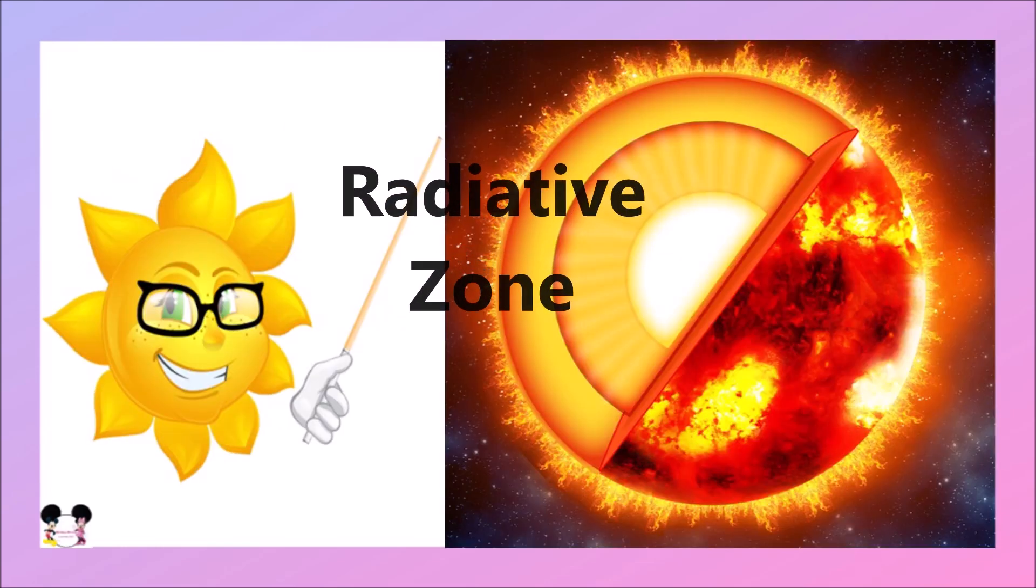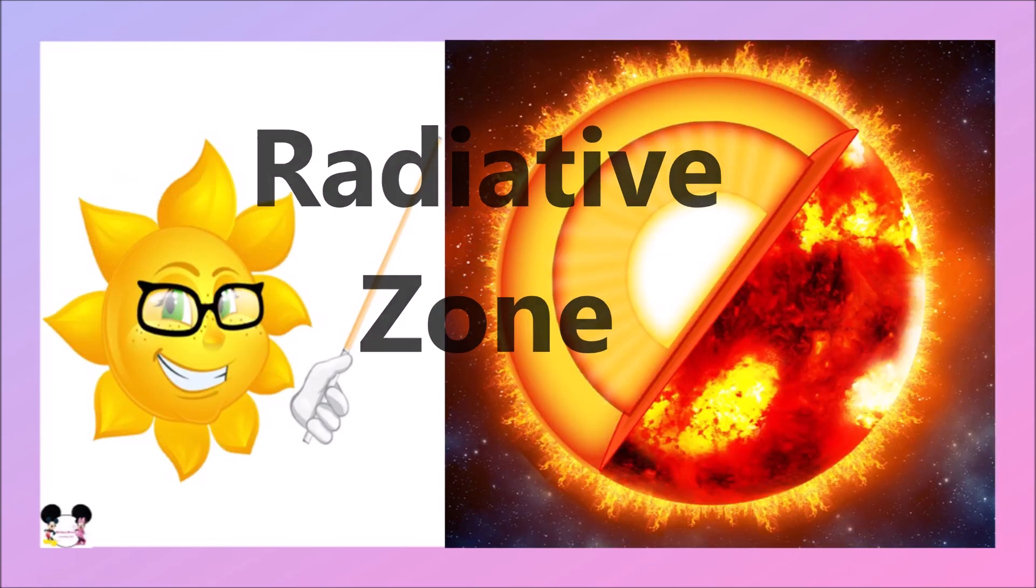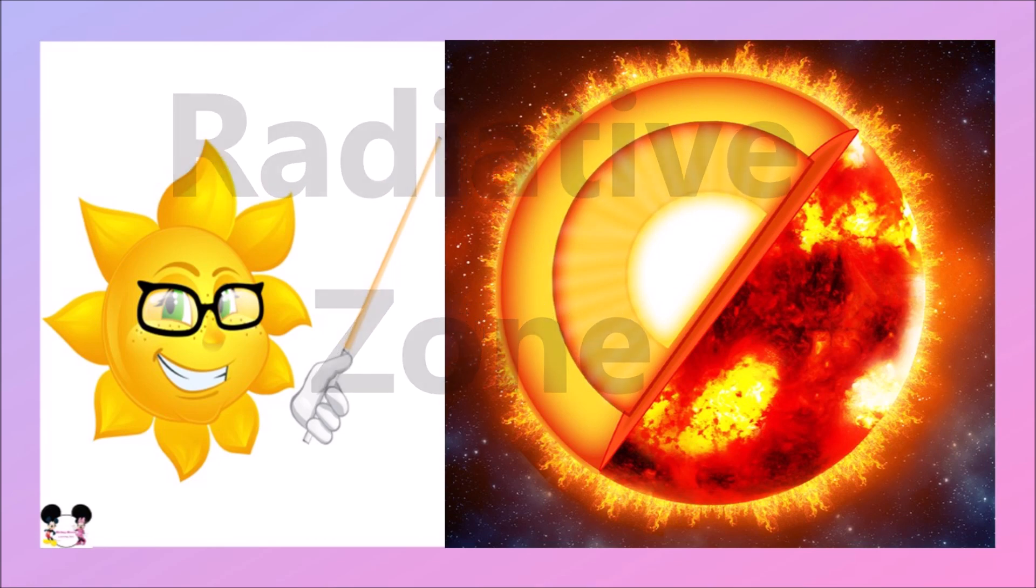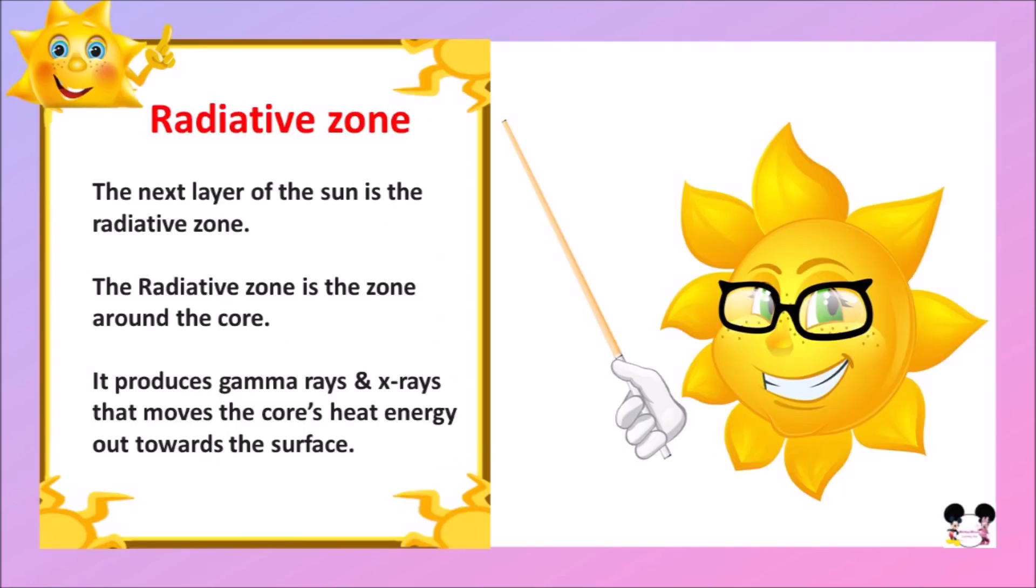The next layer is the radiative zone. The radiative zone is the zone around the core. It produces gamma rays and x-rays that move the core's heat energy out towards the surface.